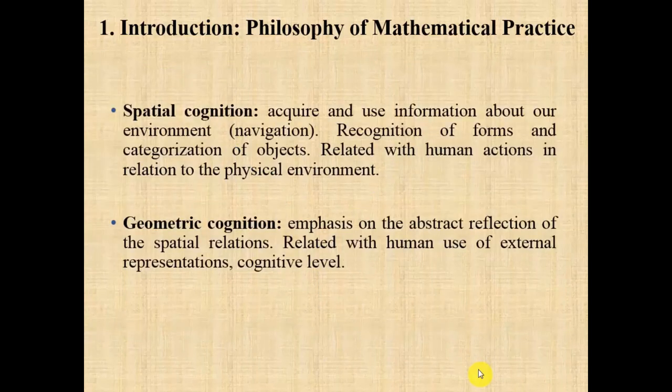In order to understand my purpose, we have to distinguish between spatial cognition and geometric cognition. Spatial cognition is the human ability to acquire and use information about our environment and is really important for navigation. It is about the recognition of forms and categorization of objects, and is related with human actions in relation to their physical environment. Geometric cognition, instead, is guided by other values and goals, and the emphasis is on the abstract reflection of spatial relations — related with human activities or use of external representations at the cognitive level.